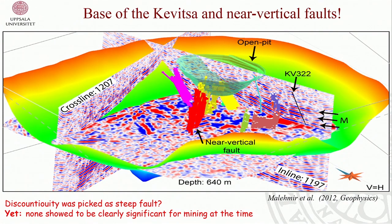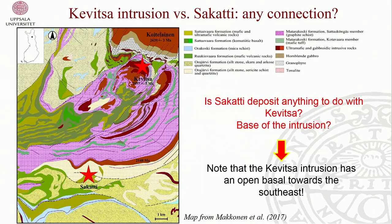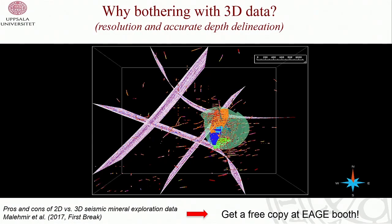One interesting result was that the base of the intrusion was nicely imaged in the seismic data, and one side was open. If you're familiar with Zaccati — the Anglo discovery in Europe that generated a lot of news — the base of the intrusion is open towards Zaccati. You could speculate there was a connection between Zaccati and Kvitsa where one could chase massive sulphide base mineralisation or contact mineralisation. To advocate the value of 3D seismic, we compare 2D and 3D data from Kvitsa, with an article published in First Break.